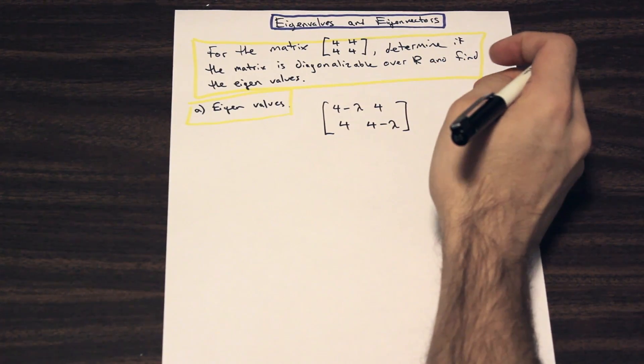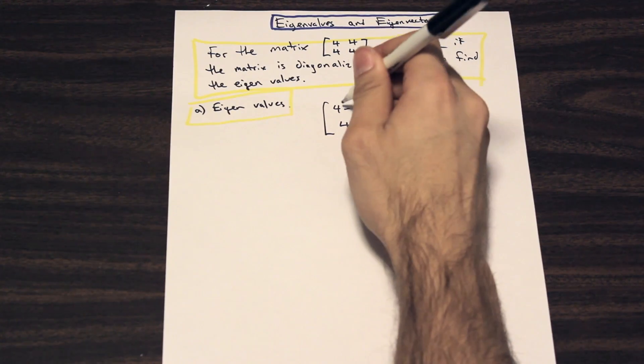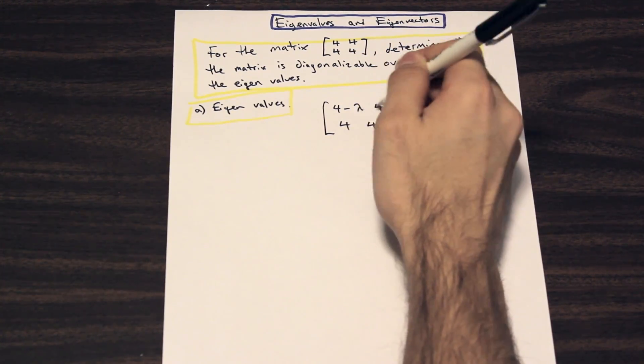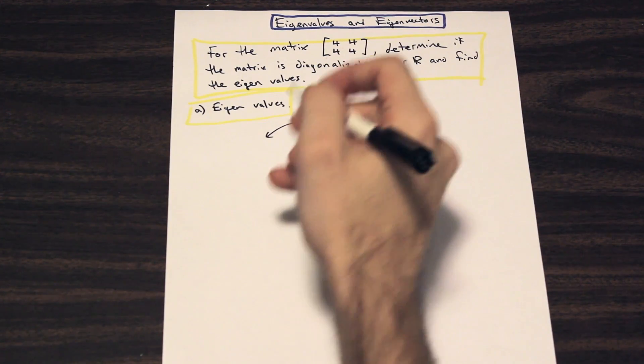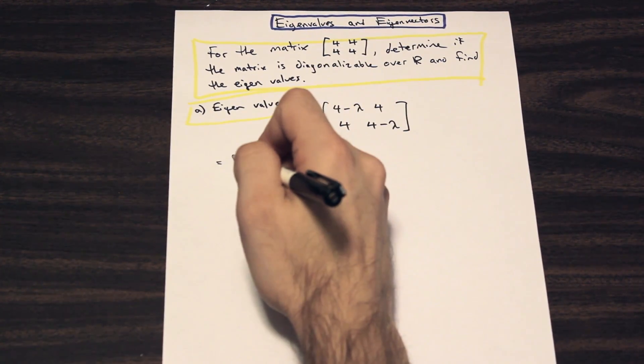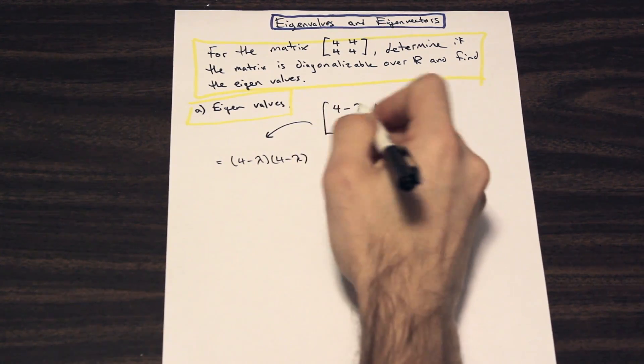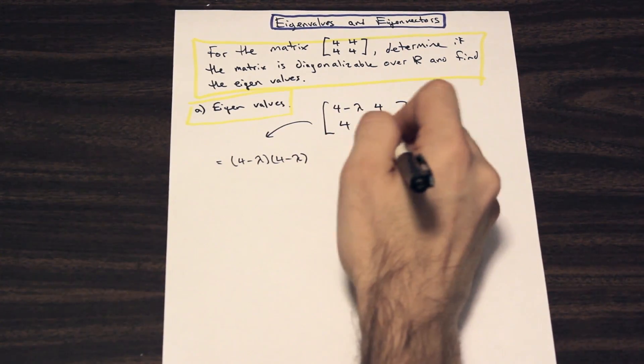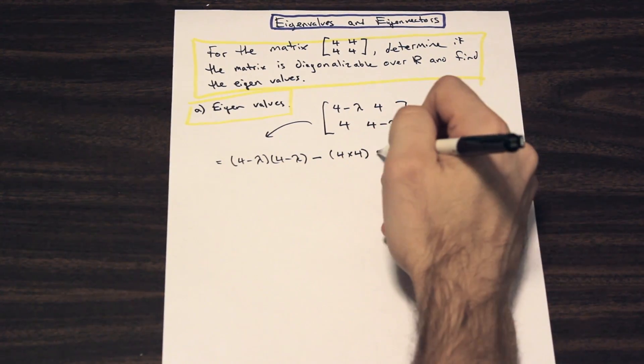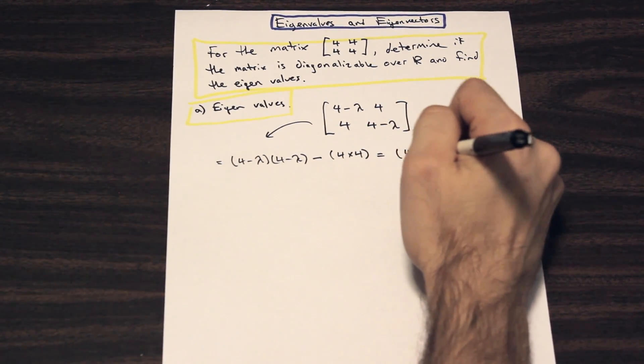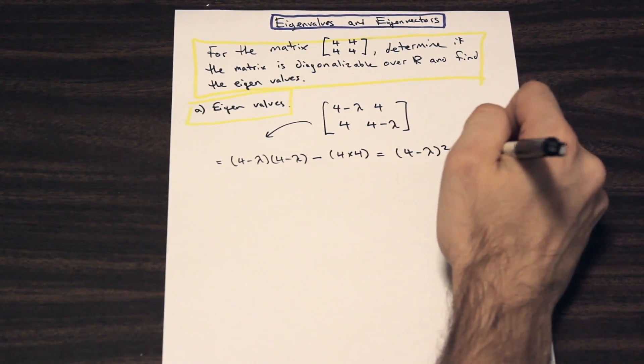So now that we've subtracted each value by lambda, we're going to evaluate this matrix. We're going to multiply these two values and subtract the product of these two values. So let's come down here and do that. That's going to be equal to (4 - λ)(4 - λ) minus 4 times 4. That's going to give us (4 - λ)² - 16.